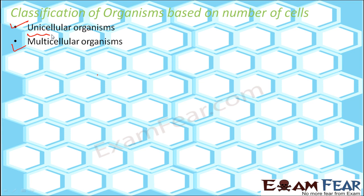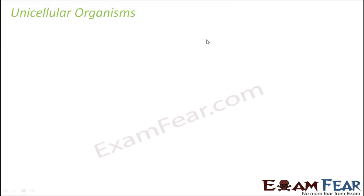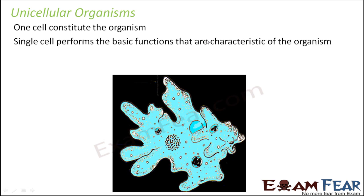Unicellular organisms are made up of one cell, and multicellular organisms are made up of many cells. In unicellular organisms, one cell constitutes the entire organism. All the life processes — for example, digestion, excretion, or respiration — everything is taken care of by this one cell. So a single cell performs the basic functions: how to get food, how to digest the food, how to absorb the food — everything is done by that single cell.